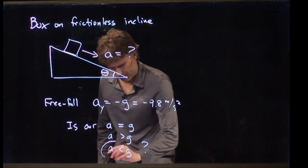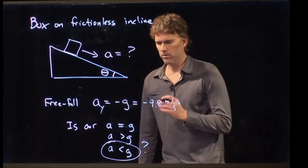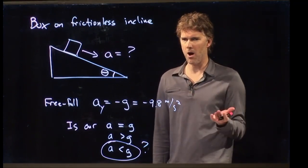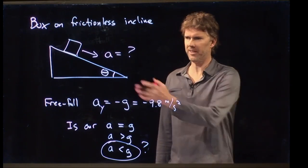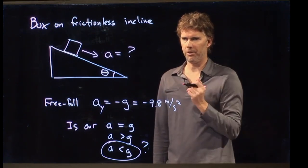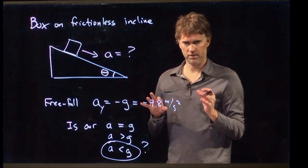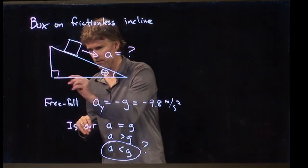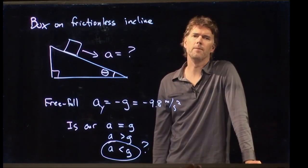So we're going to guess that it's got to be this. So I need to multiply g by something that is smaller than 1. Now, whenever you see a theta, what do you think about in terms of other functions? Whenever you see a triangle like this, particularly a right triangle, what do you think about when you see theta?